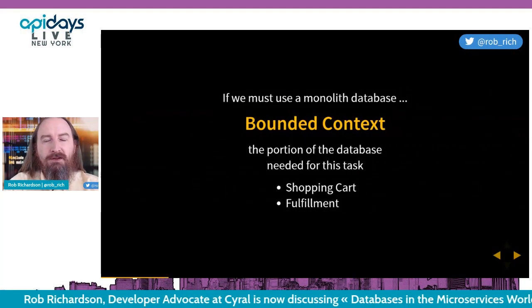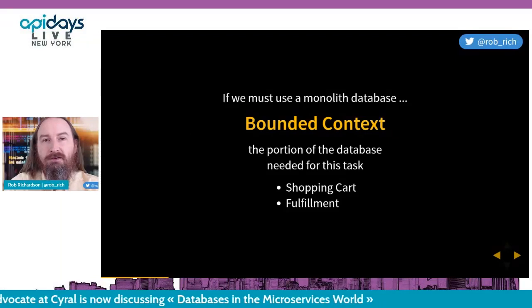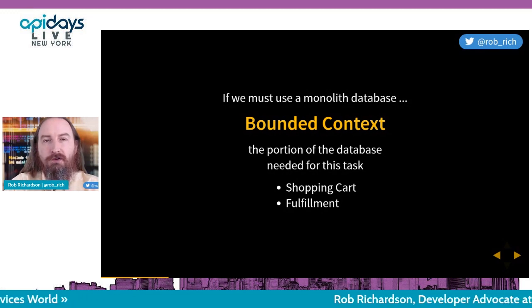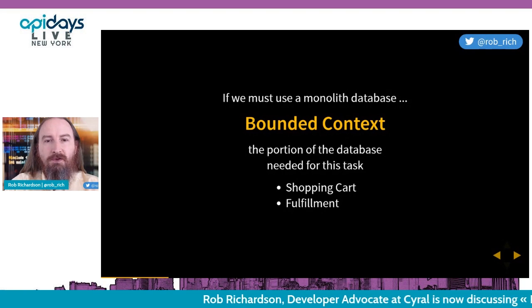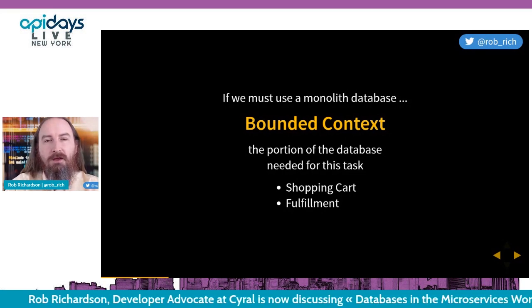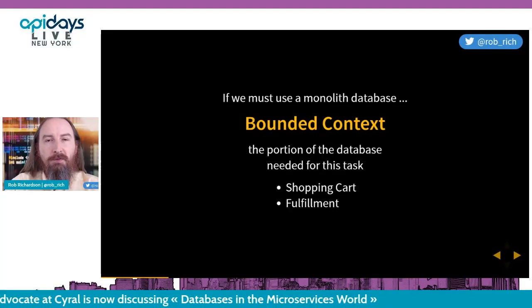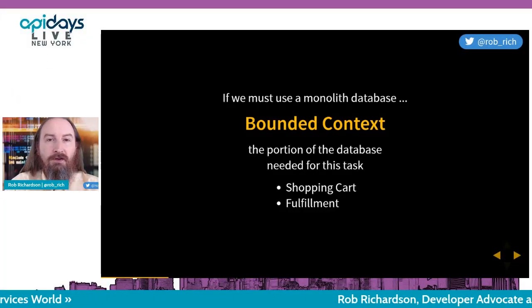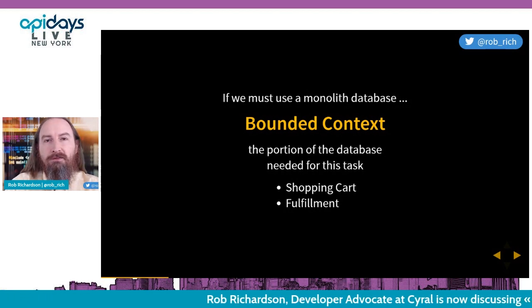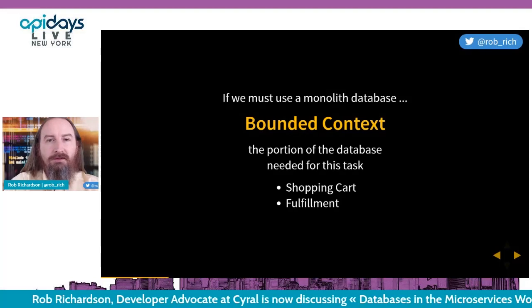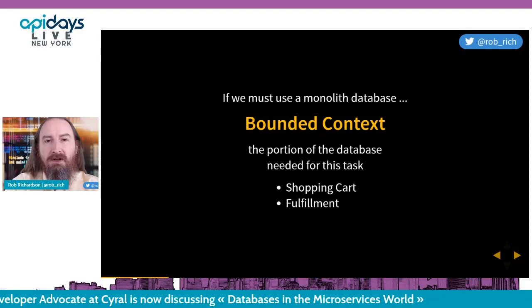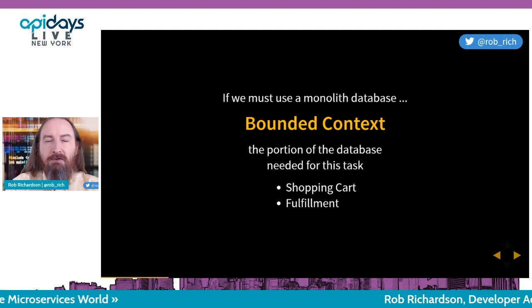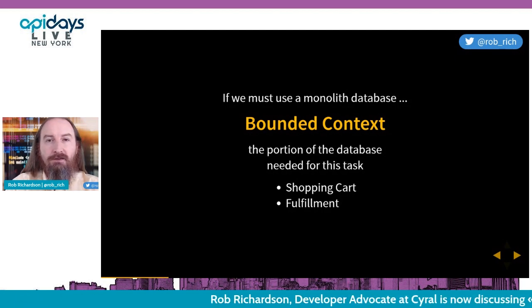So we ended up with a monolithic database. But if we have a monolithic database, we can pretend it's lots of little databases with bounded contexts. A bounded context is that portion of the database that applies to a specific domain. For example, both a shopping cart and a fulfillment system deal with products — but the shopping cart shows pictures and descriptions as a read-only view of the product catalog, while the fulfillment center only needs the product ID and quantity on hand. We can build two different bounded contexts around product details and expose them into our microservices.